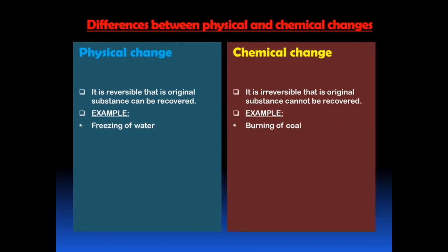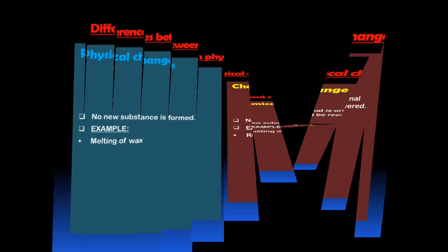The second difference: under physical change, it is reversible — that is, the original substance can be recovered. Example: freezing of water. On the other hand, under chemical change, it is irreversible — that is, the original substance cannot be recovered. Example: burning of coal.